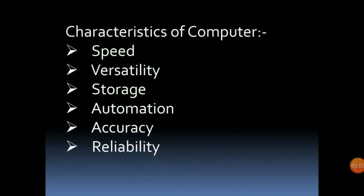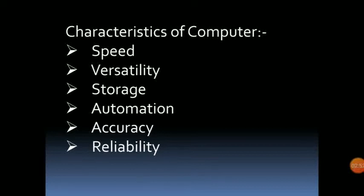Third is storage — a computer stores all the data in an appropriate format. Next is automation — a computer performs all tasks automatically. Next is accuracy — a computer gives 100% accurate results. Next is reliability — a computer is reliable as it gives consistent results. For example, if we give the same set of input any number of times, we will get the same result.